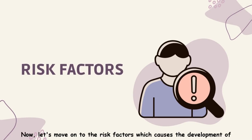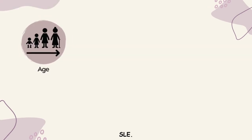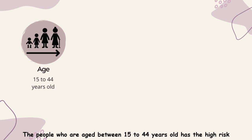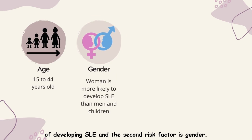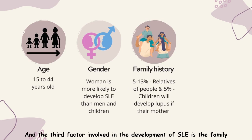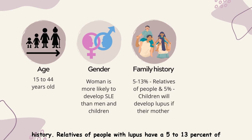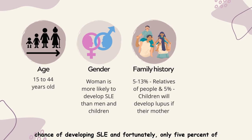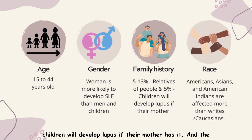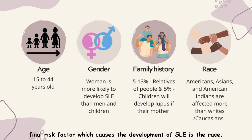Now let's move on to the risk factors which cause the development of SLE. The first risk factor is age — people aged between 15 to 44 years old have the highest risk of developing SLE. The second risk factor is gender; women are more likely to develop SLE compared to men and children. The third risk factor is family history — relatives of people with lupus have a 5 to 13% chance of developing SLE, and only 5% of children will develop lupus if their mothers have it.